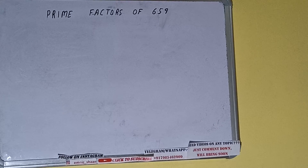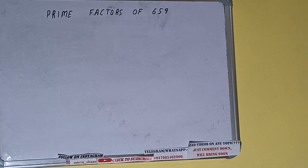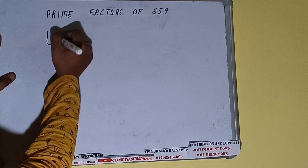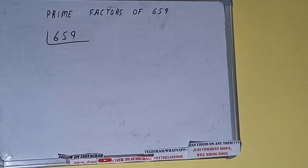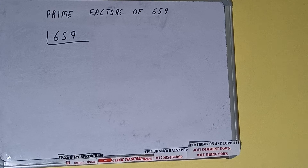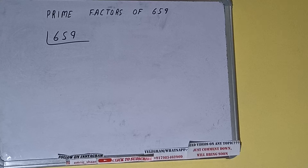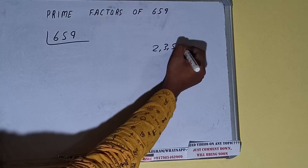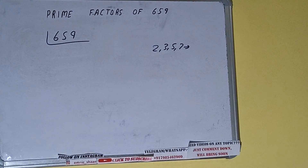Hello friends, in this video I'll be helping you with the prime factors of the number 659. First of all we need to write the number like this. The next thing we need to know about is what are prime numbers. Prime numbers are numbers that are divisible by 1 and the number itself, like 2, 3, 5, 7 and so on.